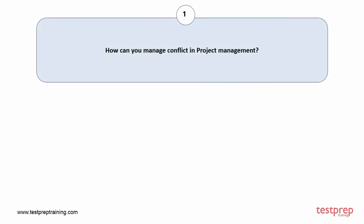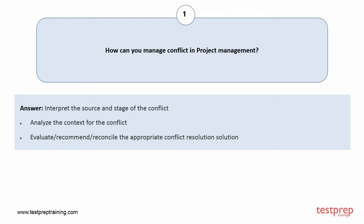Question number 1: How can you manage conflict in project management? Your answer is: 1. Interpret the source and stage of the conflict. 2. Analyze the context for the conflict. 3. Evaluate, recommend, or reconcile the appropriate conflict resolution solution.